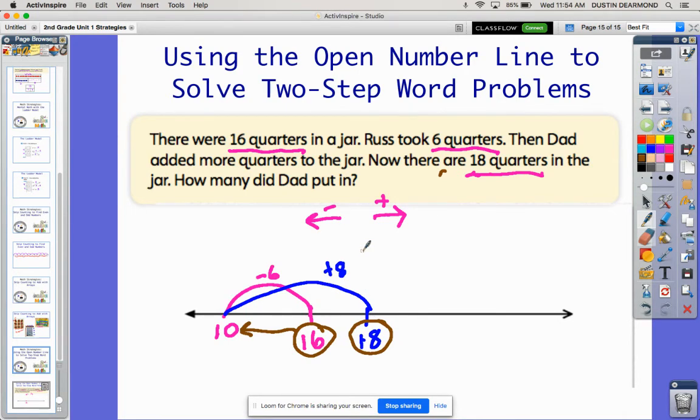But his dad put some more quarters in, which took us all the way back over here to 18. And when I jumped from 10 to 18, I know that's a jump of eight. So here's the question. Where is our problem? Where's our number sentence? So I'm going to put it up here. We started with 16, took away six, which took us to 10. But then from that 10, dad added. I want to put a little question mark there because we didn't know how many he added. But we got to 18.